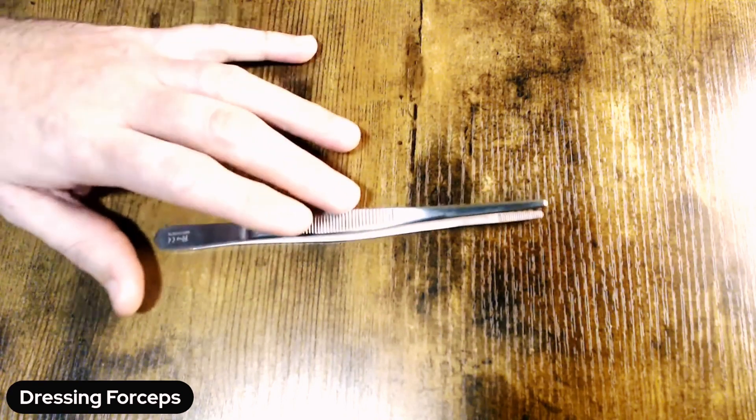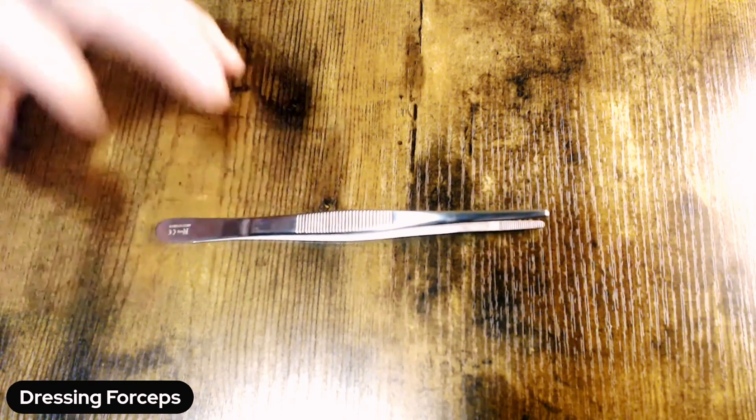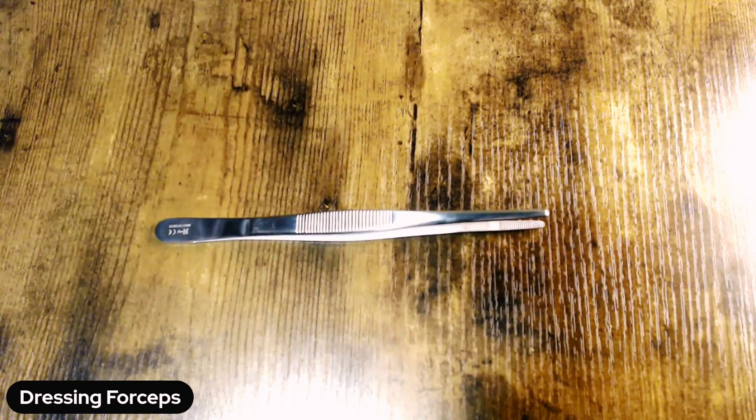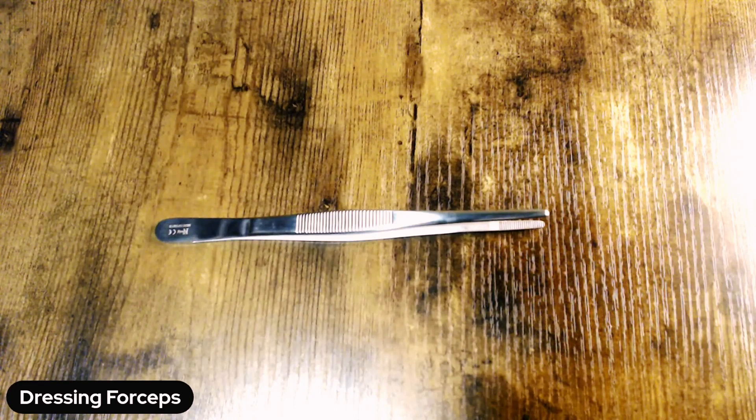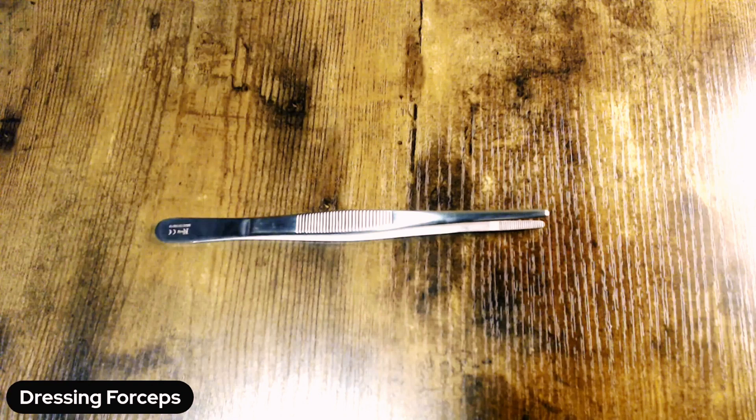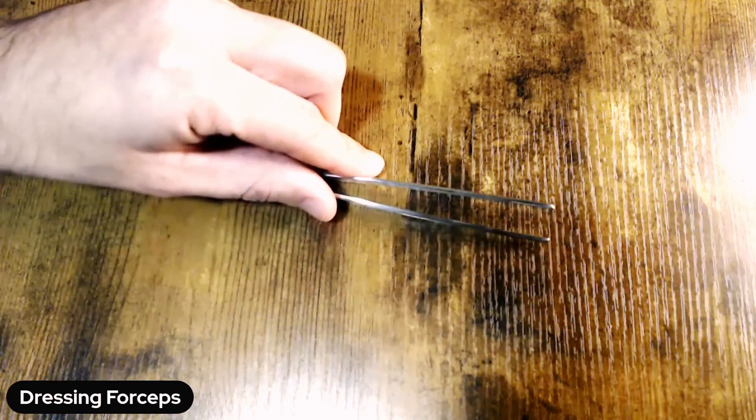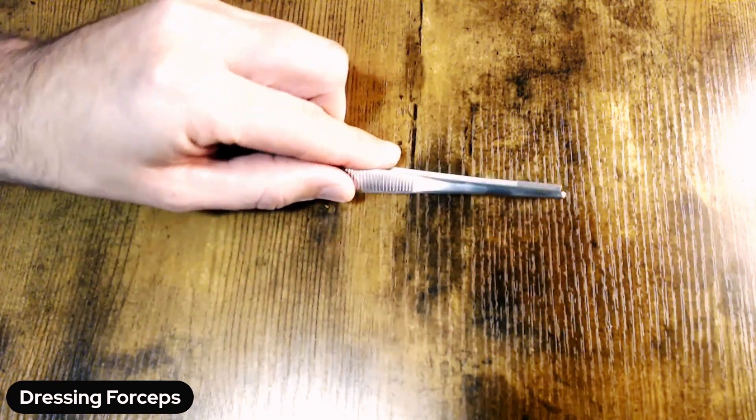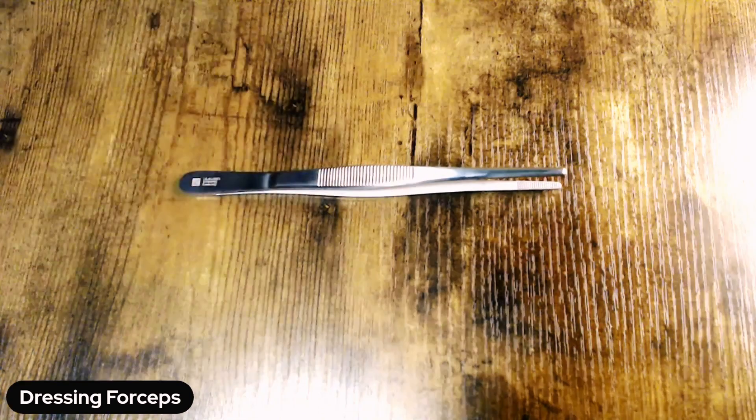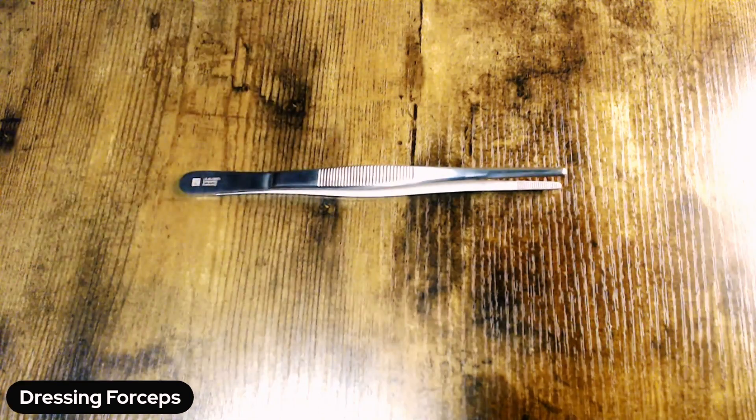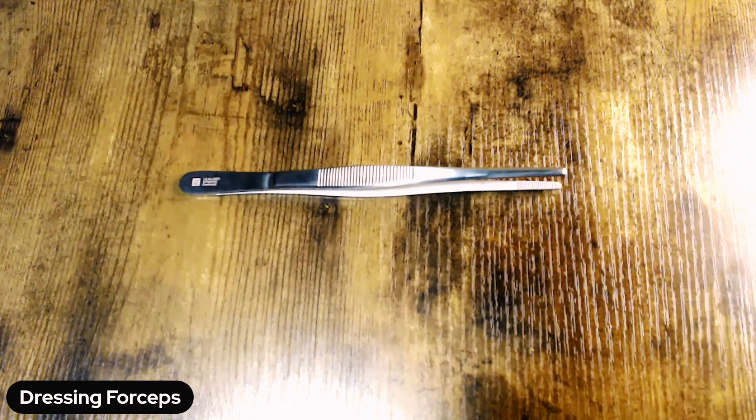But in fact, the dressing forcep, or as you'll see it sometimes called, the forcep without teeth, which is also confusing, does have serrations on the tip. And so that's an easy identifiable mark that you are handling a smooth or dressing forcep in the assembly area.